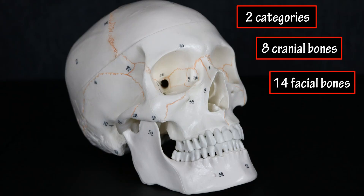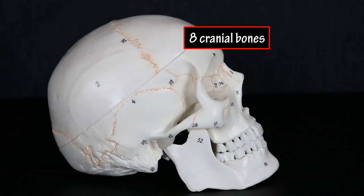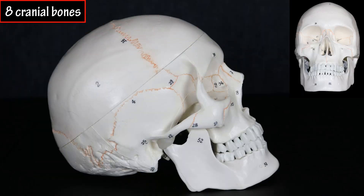There are also 6 ear bones and a bone in the neck that we will be covering that are associated with the skull. The 8 cranial bones include the frontal bone, located at the top front of the skull, and it extends inward, forming the top portion of the eye orbit.